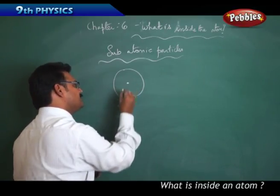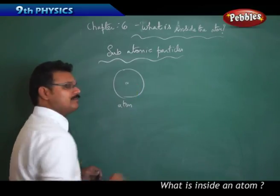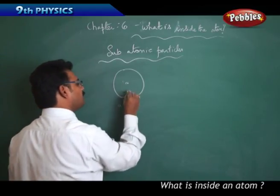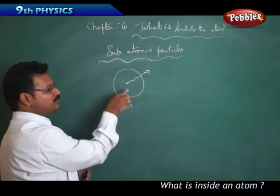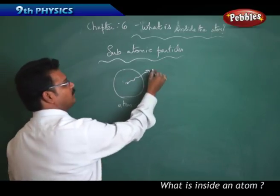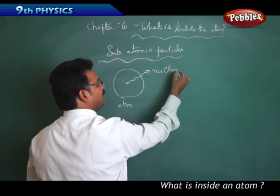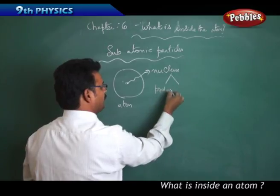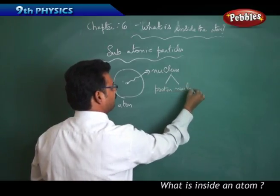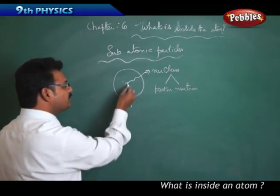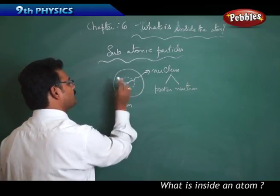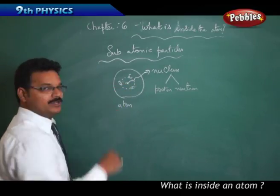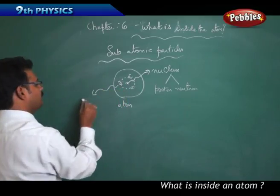In the beginning of modern physics, it was discovered that inside the atom there is a very very small positive content of matter called the nucleus. Inside the nucleus there are two particles: proton and neutron. Around the nucleus, in orbits, negatively charged particles rotate, and that negative charged particle is called the electron.